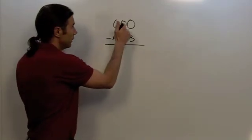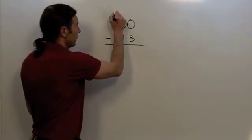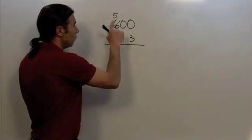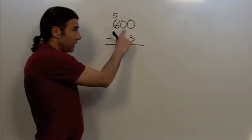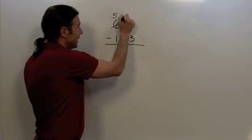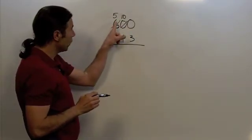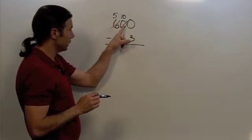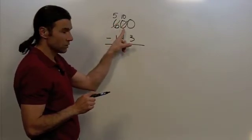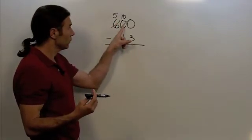I'm going to borrow a 1 from the hundreds place, which is going to make that a 5. Now, 100, when I put that in the tens place, is going to become 10 tens. So what I did is I borrowed a 1 here. Now, when I move that 1 to the next place value, it adds 10 to this value. That value is 0, so now it becomes a 10.